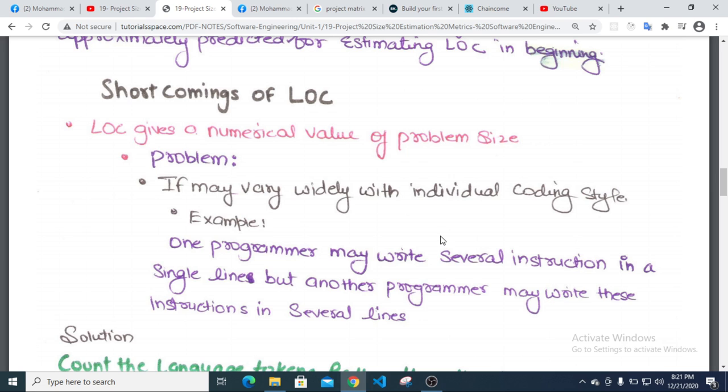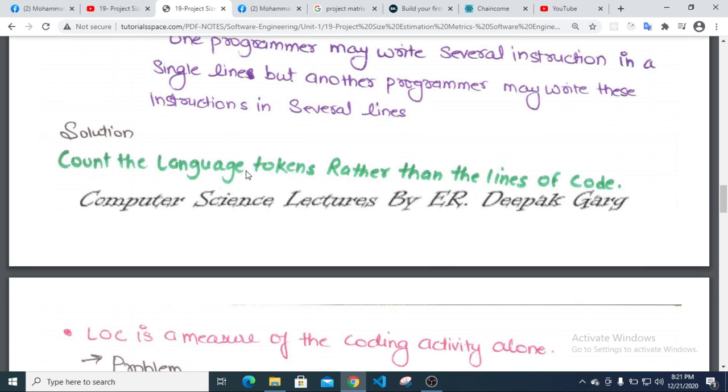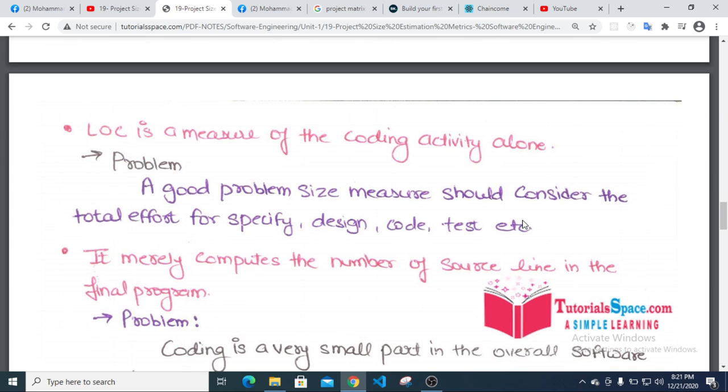A better solution is to count language tokens rather than lines of code. LOC is a measure of the coding activity alone. A good problem size measure should consider the total effort needed for technology, specification, design, code, test, etc.